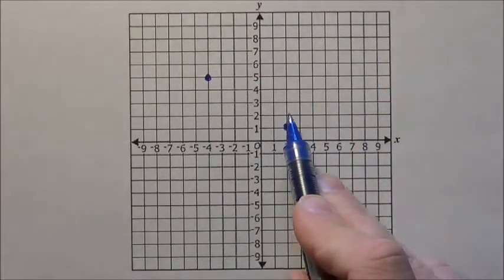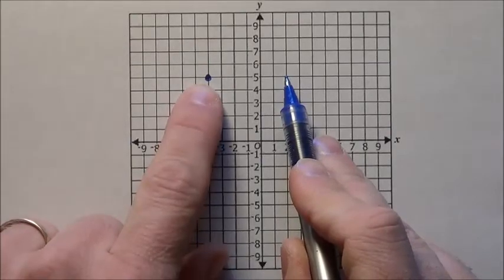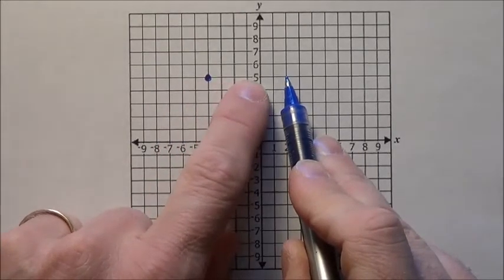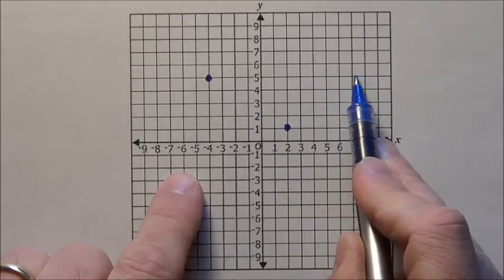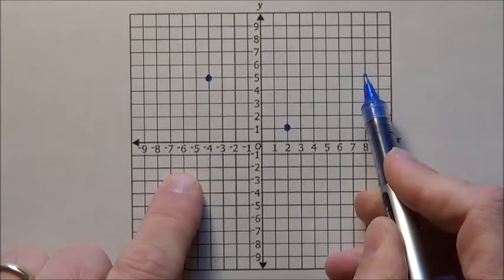But also note, if this is in the center, this point right here is 1, 2, 3, 4, 5, 6 away, which means 1, 2, 3, 4, 5, 6 away is going to be the other edge.